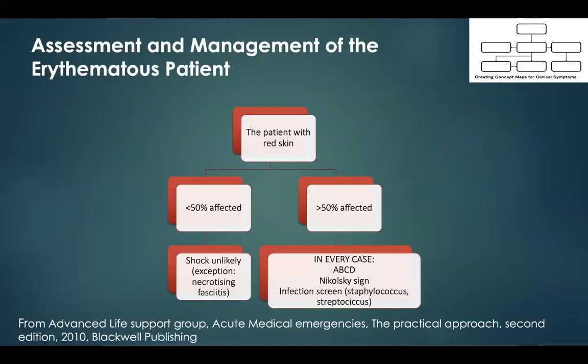The second type of rash we're going to come on to is erythema — red skin, specifically defined as redness that blanches on pressure. Typical symptoms that can be associated with this include red, painful and itchy skin, particularly over a large area. This ties in with a condition called erythroderma, which is specifically defined as an intense erythema having at least 90% of the skin surface area affected.